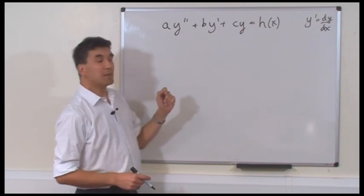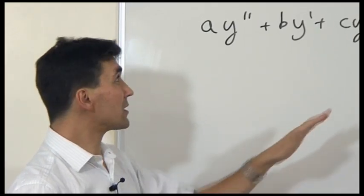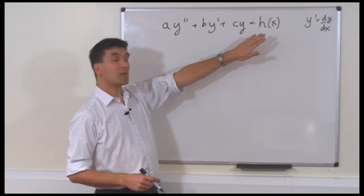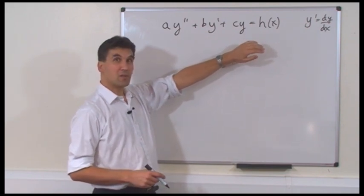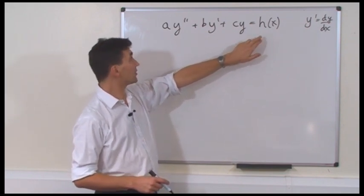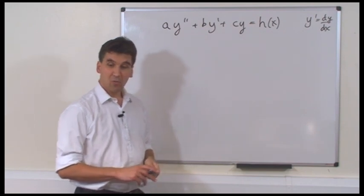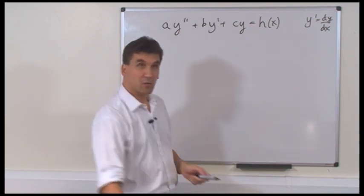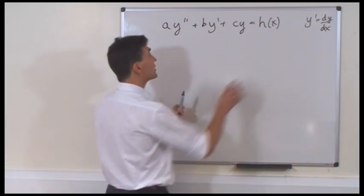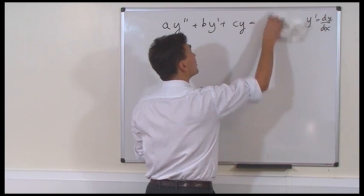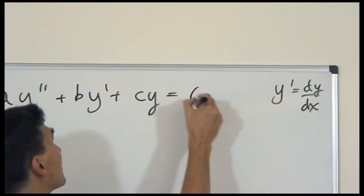As I've written it, it's inhomogeneous. That inhomogeneous means Y equals 0 is not a solution, and that's because of this H of X. So what I'm going to be talking about today is the case where H is equal to 0.